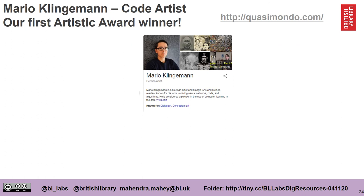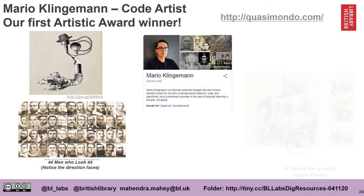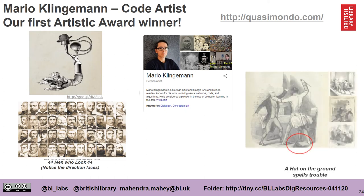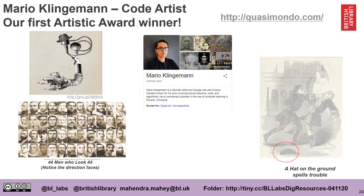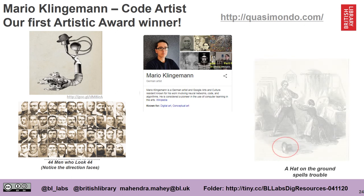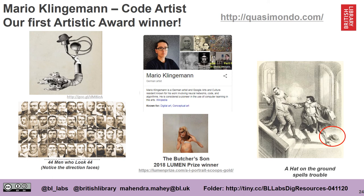Mario Klingerman was our first artistic award winner in 2015. Mario uses algorithms to create his art and also to categorise things. On the left you can see '44 men who look 44' — something he did for his 44th birthday — and on the right a collection of 400 images he found where there was always a hat on the ground. Mario won a major art prize in 2018, which was based on using a set of western portraiture to enable a computer to create its own art.